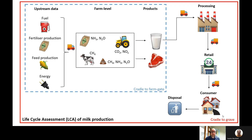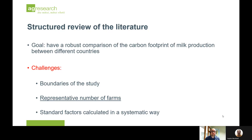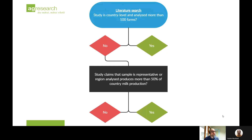The second challenge was to have a representative number of farms. Since life cycle assessment is very data hungry and a laborious process, most published studies on milk production are usually comparing two different management systems, like organic versus conventional milk, or pasture-based versus feedlot — and that's not representative of the country's production. So our first cutoff criterion was to check if the study was performed at a country level and had more than 100 farms.